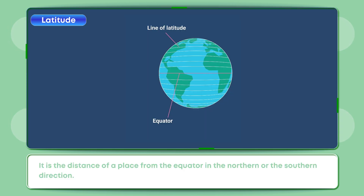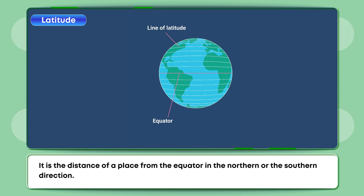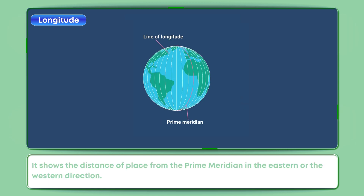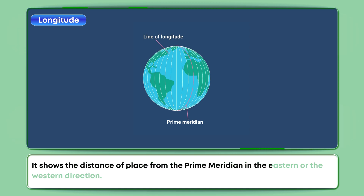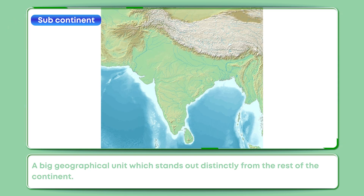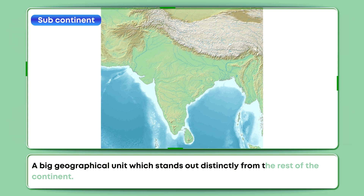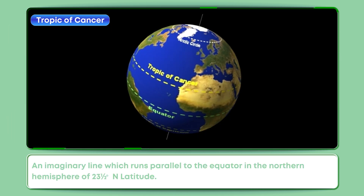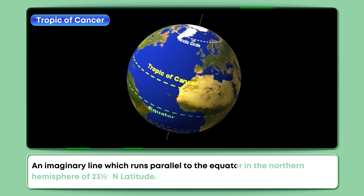Latitude: It is the distance of a place from the equator in the northern or the southern direction. Longitude: It shows the distance of a place from the prime meridian in the eastern or the western direction. Subcontinent: A big geographical unit which stands out distinctly from the rest of the continent. Tropic of Cancer: An imaginary line which runs parallel to the equator in the Northern Hemisphere at 23.5 degrees N latitude.